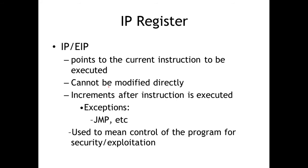EIP — the instruction pointer — is another very important register. Its basic purpose is to control execution. It points to the current instruction to be executed. We put that address into that register so that it knows what's next to be executed. We cannot modify EIP directly, although there are mnemonics — operations — that will indirectly modify it. Things like jump or call will transfer execution by essentially loading the target address into EIP, so that EIP then loads that instruction out of memory.